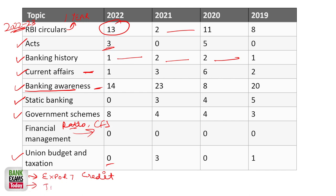Then topics like IRAC norms, PSL (Priority Sector Lending), and documentation — these are really, really important from examination point of view. These are some of the static kind of topics, part of what I would call general banking or banking awareness, and they are important in general.